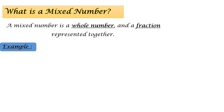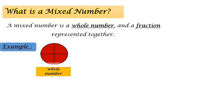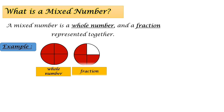Let us look at this example. Here we have a whole number, and another circle divided into four parts with three shaded, so this is a fraction. The whole number is one, and the fraction is three shaded out of four, so it will be three quarters.